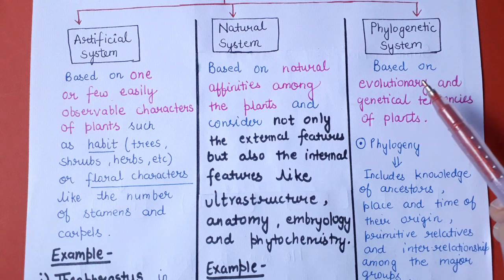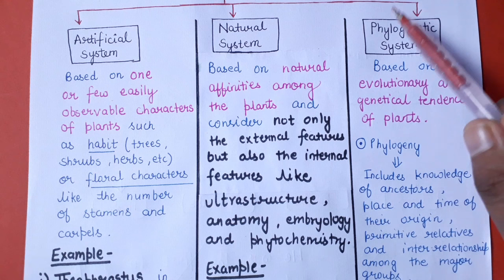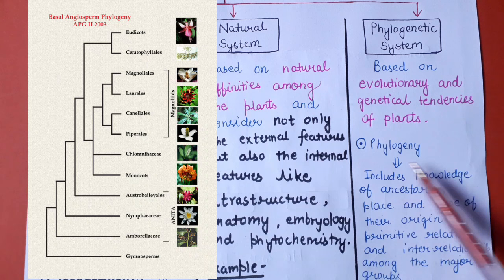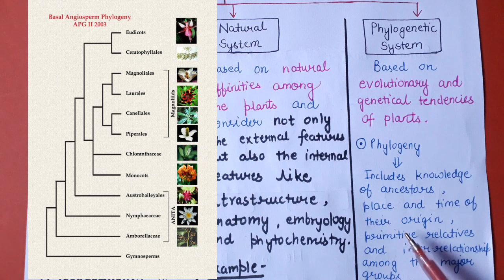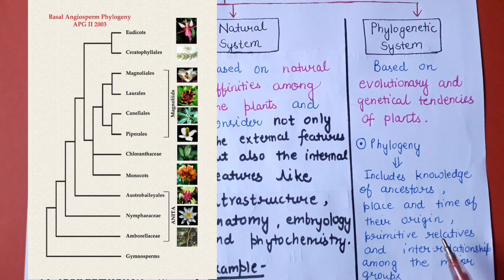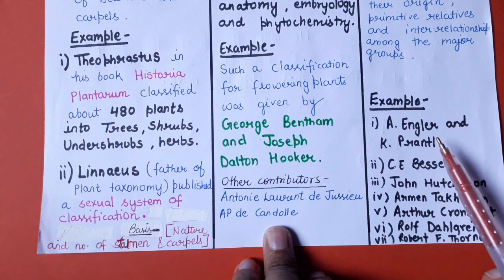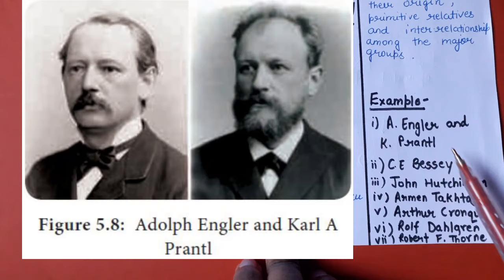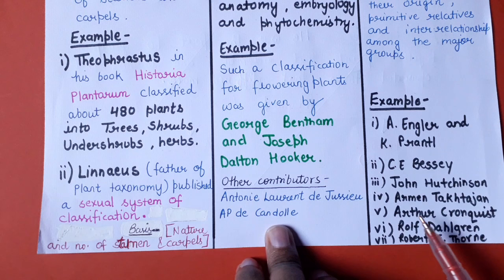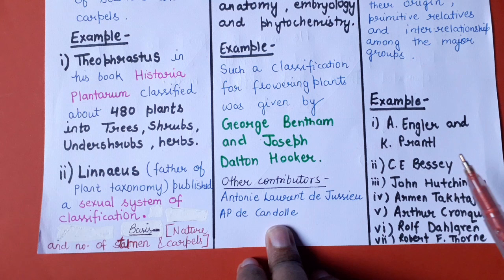Now let's talk about the phylogenetic system. In the phylogenetic system, plants have been classified on the basis of evolutionary and genetic characters. Phylogenetic system means the knowledge of ancestors, the place and time of their origin, and the interrelationships of the major groups with their primitive relatives. There are many classifications that are based on the phylogenetic system.